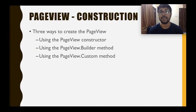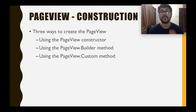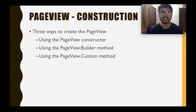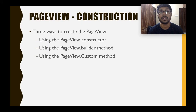There are three ways to create page views. Starting off, we have the page view constructor, then we have page view.builder, and page view.custom. If you've followed the list view video, you'll find it very similar, because list view also follows the same three methods. We're going to talk about them and see how page views are actually created.